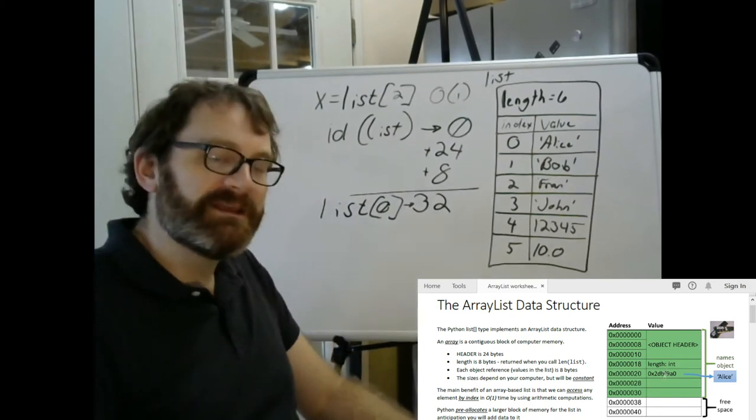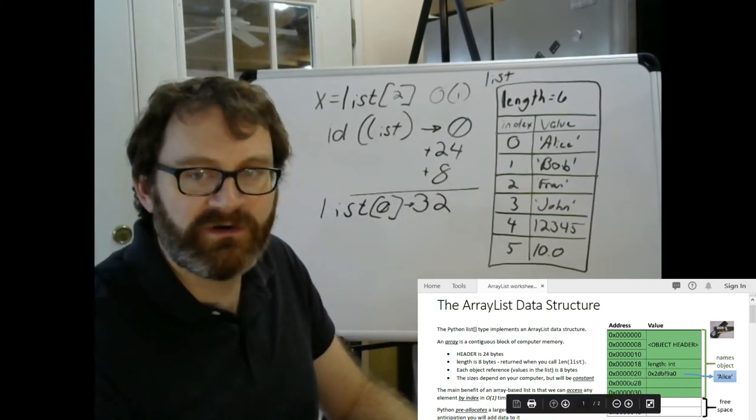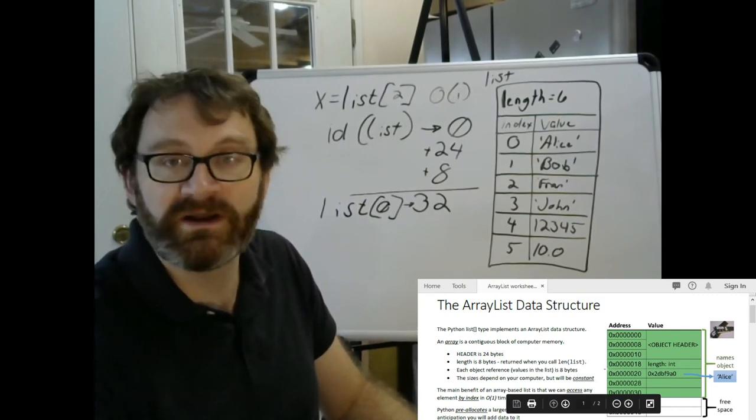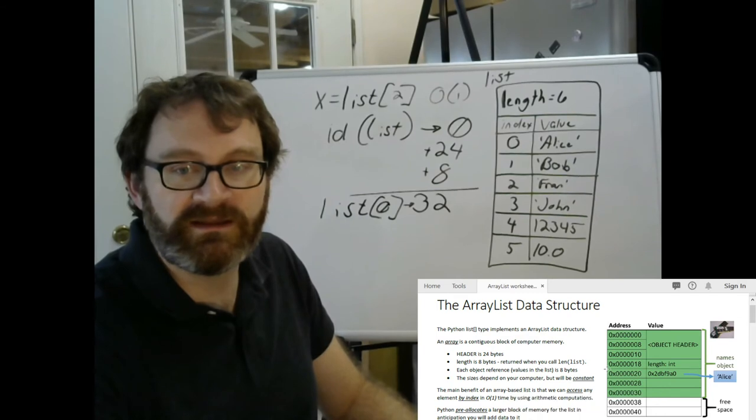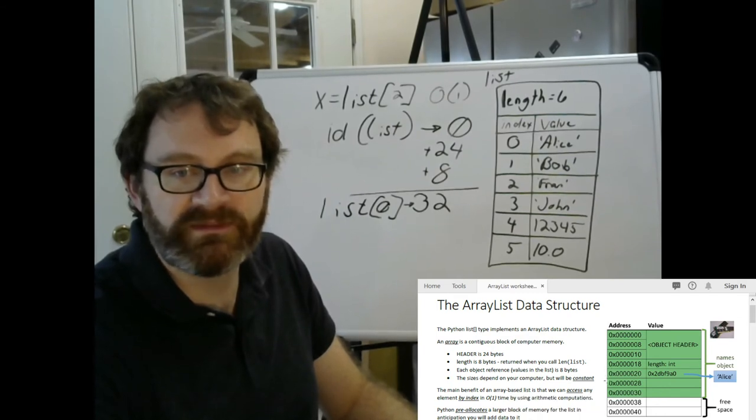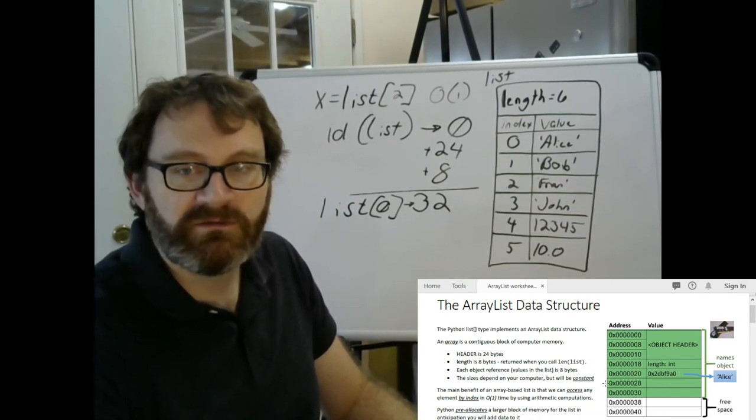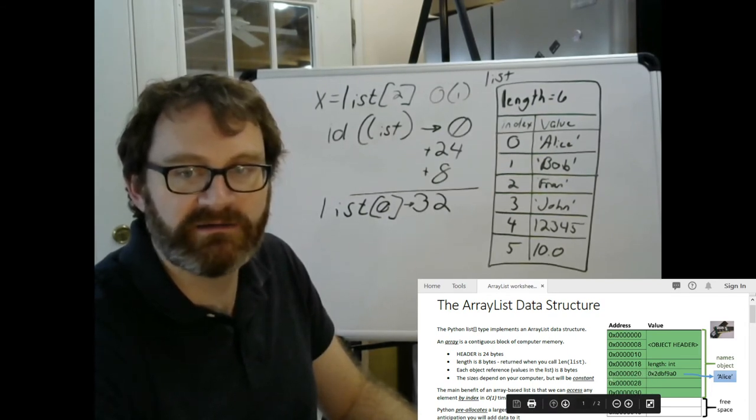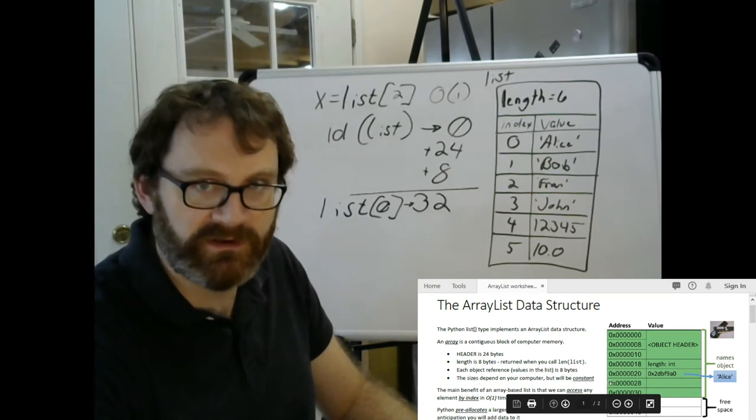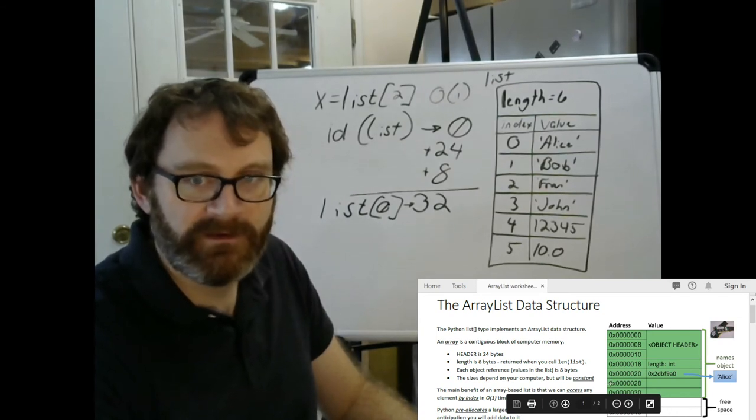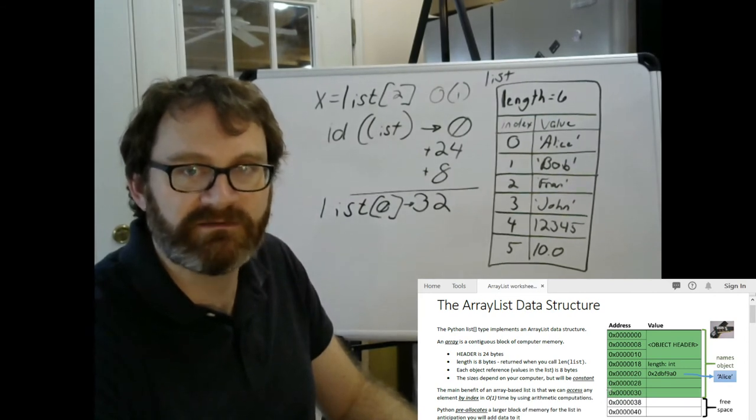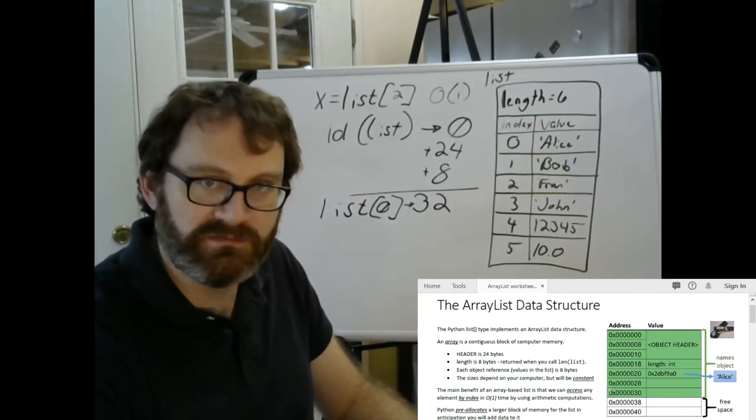If we want index zero, how far down do we skip from this point? Nowhere. We don't go anywhere. But what if we want to go to index one, this guy? Well, if this guy is size eight, this line is eight bytes, I multiply it by the index, one. If I want to go down two slots, I multiply eight by the index, two.